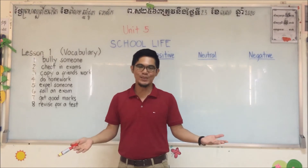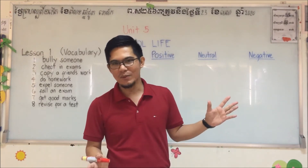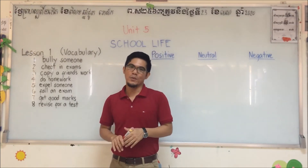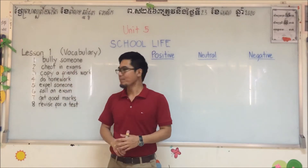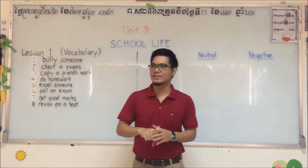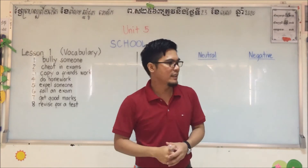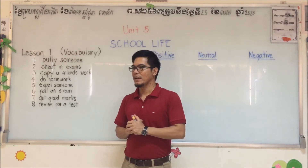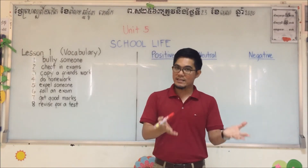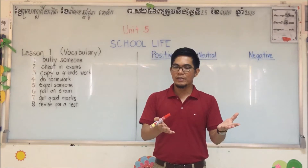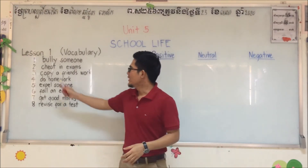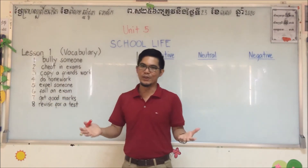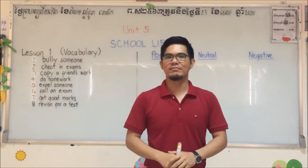Number two: cheat in exams. Cheating is common in school and also outside school — in normal work, cheating is very familiar, that's why we have to learn it. Number three: copy a friend's work. Copying could be homework, a school project, an exercise, or an answer for worksheets. Just copy a friend's work. Number four: do homework, or do your assignment. Where should you do your homework? You should do your homework at home.